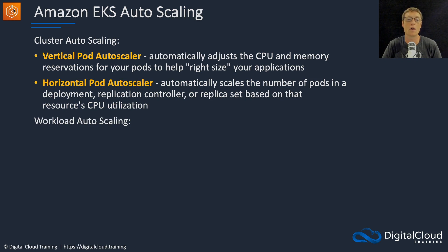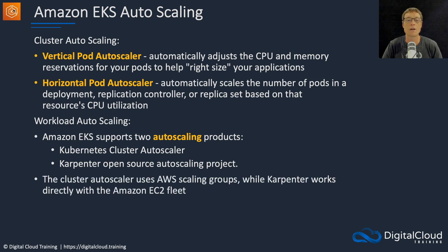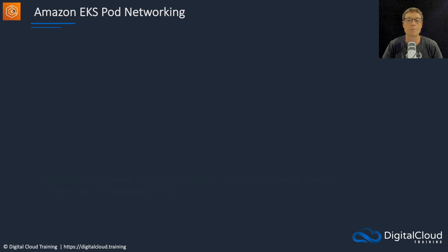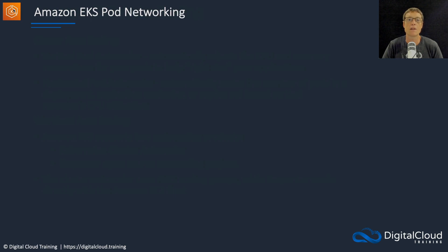There's also workload auto scaling. EKS supports two auto scaling products: the Kubernetes Cluster Autoscaler and the Karpenter open-source auto scaling project. The Cluster Autoscaler uses Auto Scaling Groups from AWS, while Karpenter works directly with the EC2 fleet. These do come up in exam questions, so make sure you remember the various ways you can scale an EKS cluster.